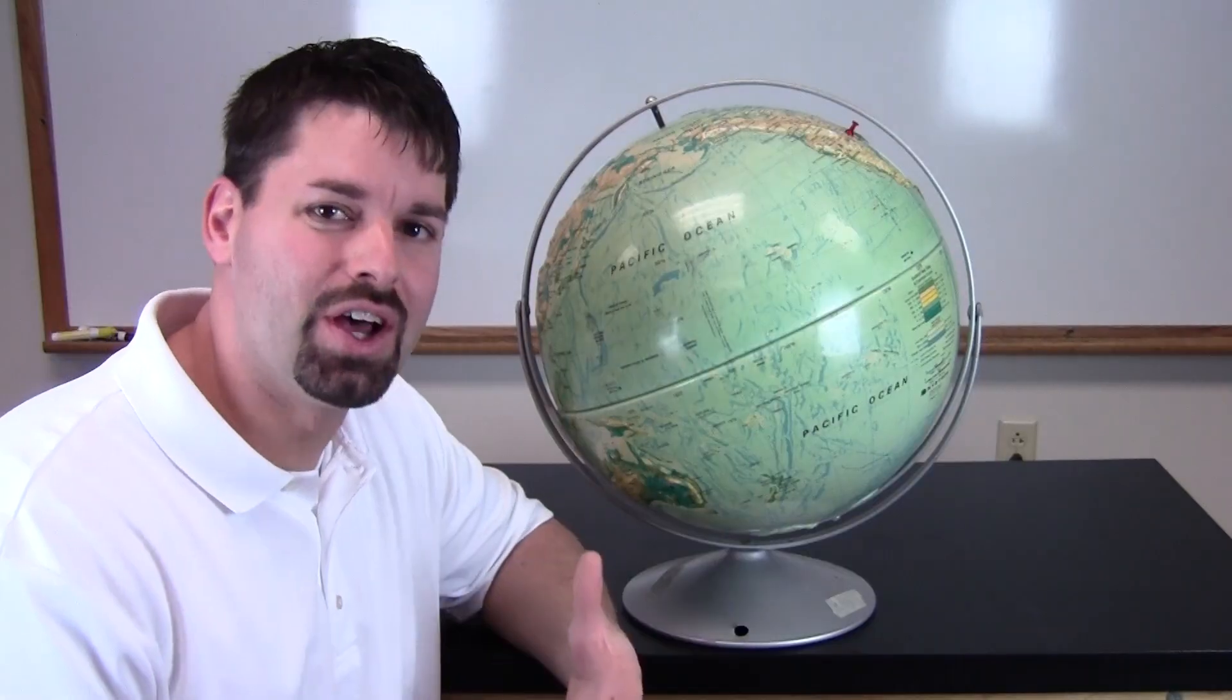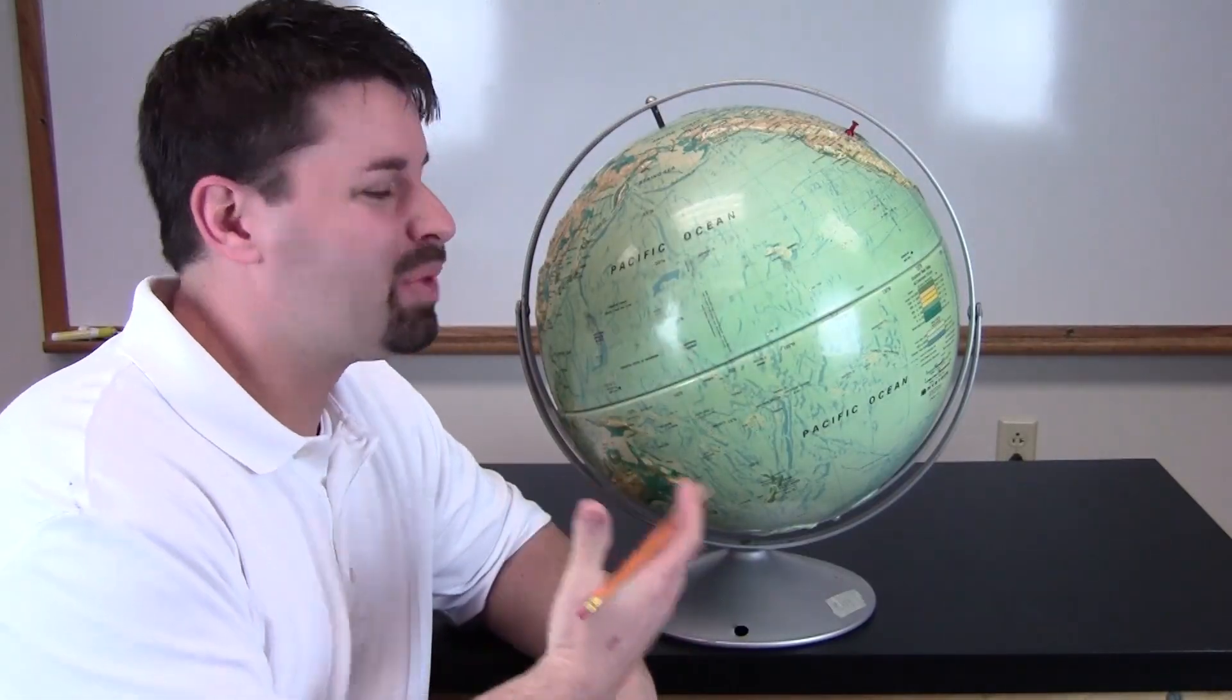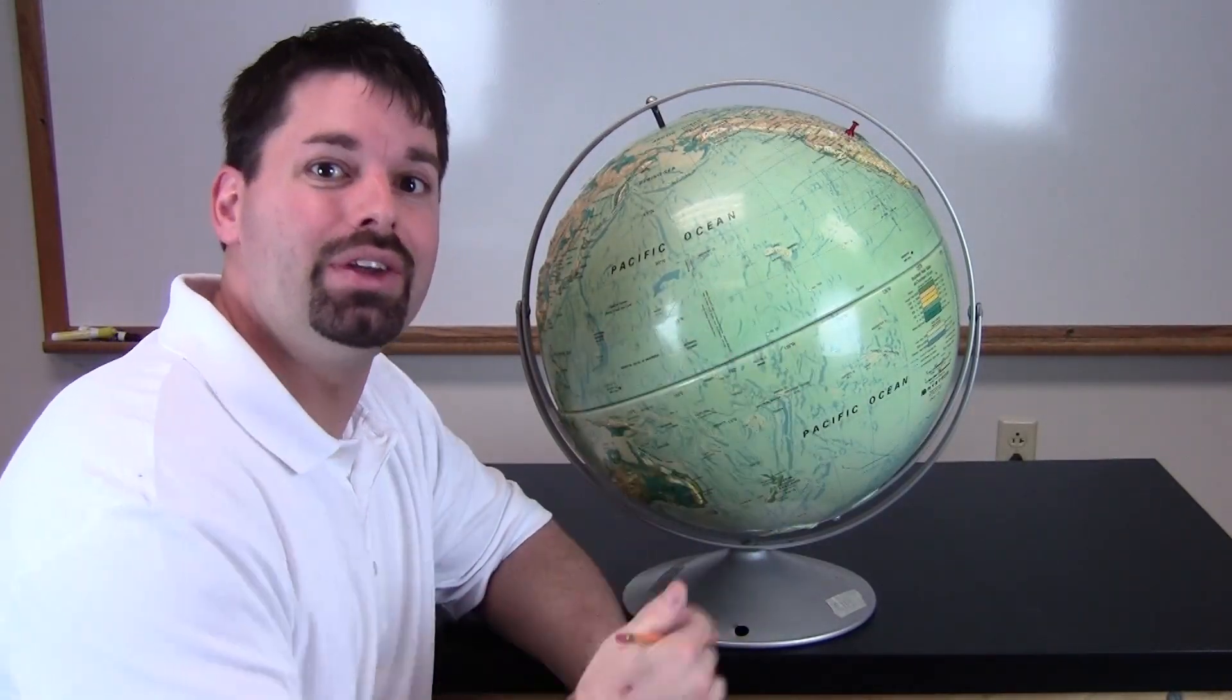It looks like the Sun is actually moving across the sky. That's just not true. Through science we've discovered that in our solar system the Sun stays still. The planets, our Earth included, spins and that's what gives us night and day.